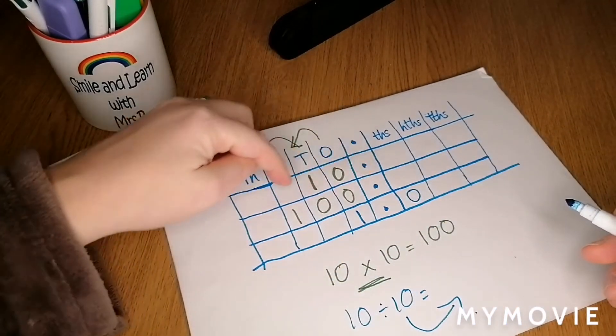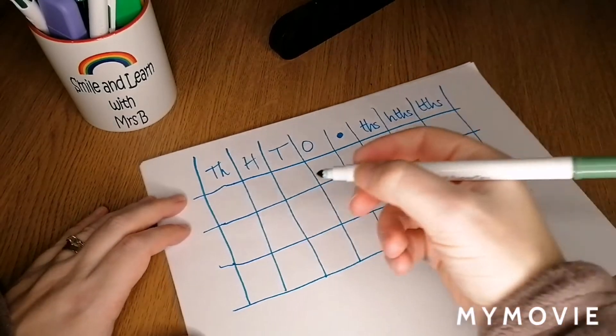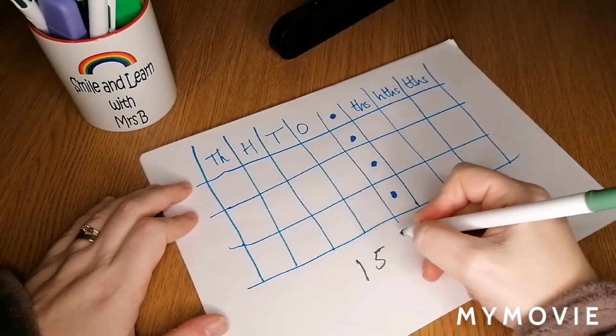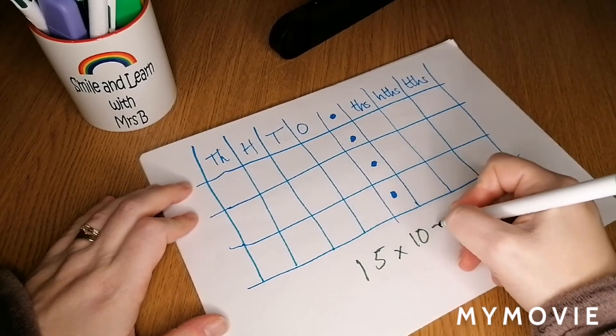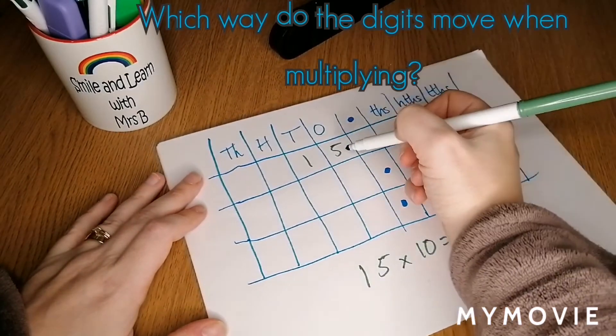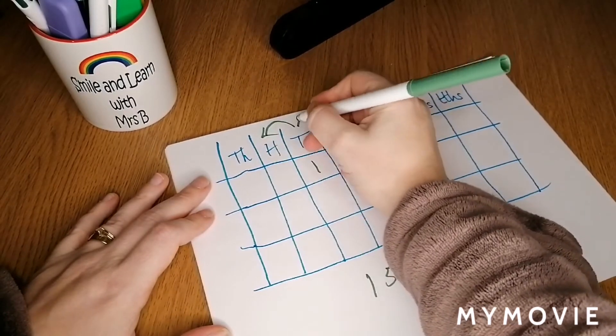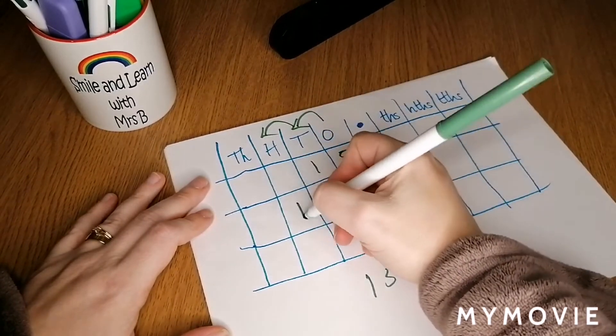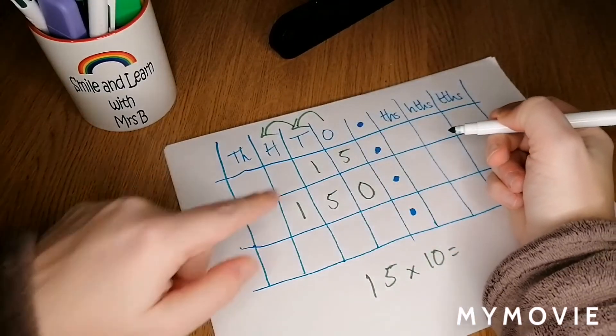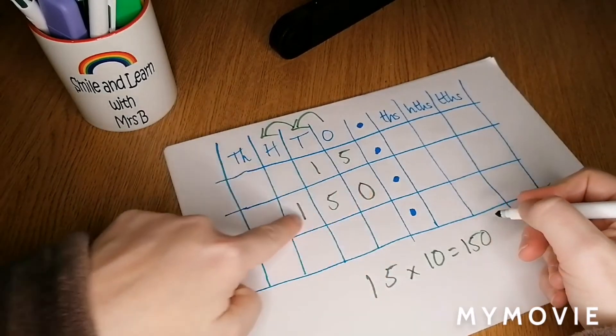Let's look at the number 15. 15 multiplied by 10 equals... So 15 on the place value grid. Multiply, and remember we move digits to the left—one place this way for each digit. One moves to the hundreds, five moves to the tens. We've got nothing in the ones, so we represent that with that zero. 15 times 10 is 150.